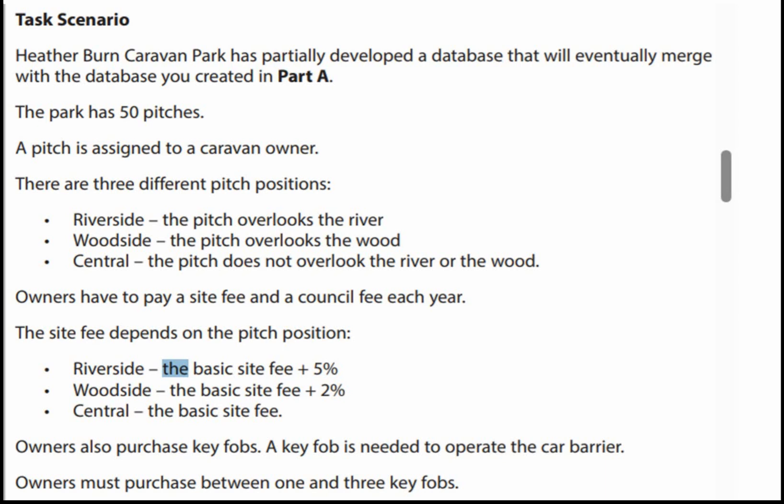Owners have to pay a site fee and a council fee each year. The site fee depends on the pitch position: Riverside is the basic fee plus 5%, Woodside is the basic fee plus 2%, and Central is just the basic fee. Owners also purchase key fobs, which are needed to operate the car barrier. Owners must purchase between 1 and 3 key fobs.